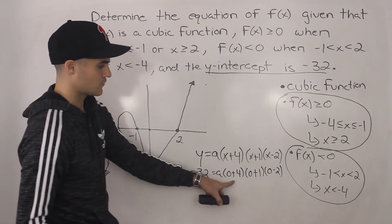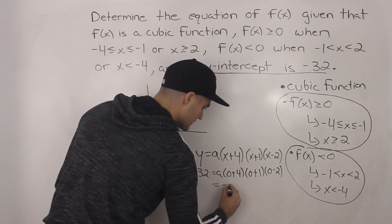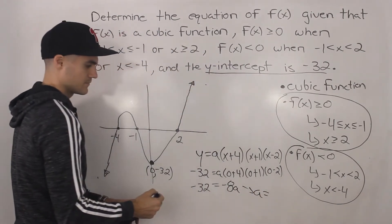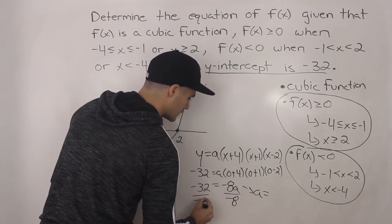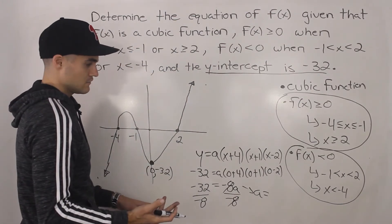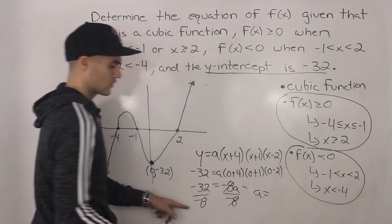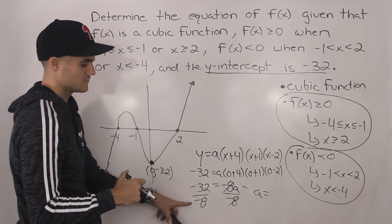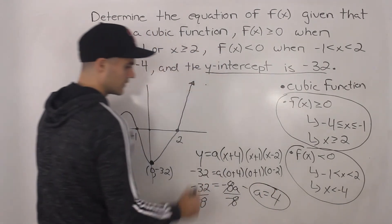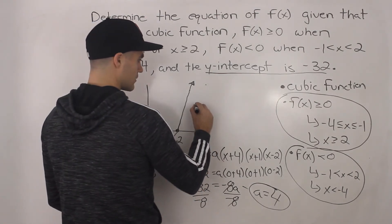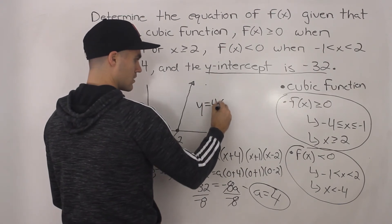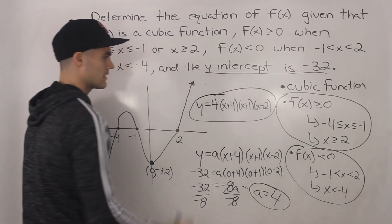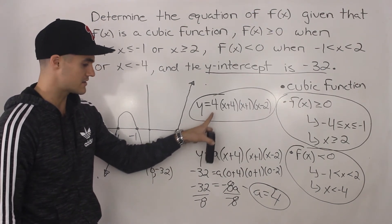So 0 plus 4 is 4, times 1, times negative 2. That gives us negative 8a equals negative 32. To isolate a, divide both sides by negative 8. The negatives cancel and 32 over 8 is 4, so a equals positive 4. So the equation is 4 times (x plus 4)(x plus 1)(x minus 2). That is our final answer.